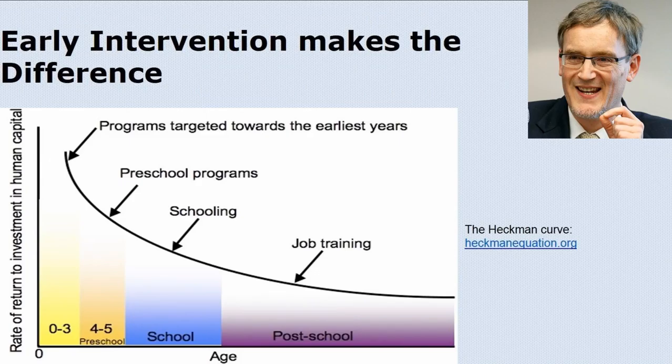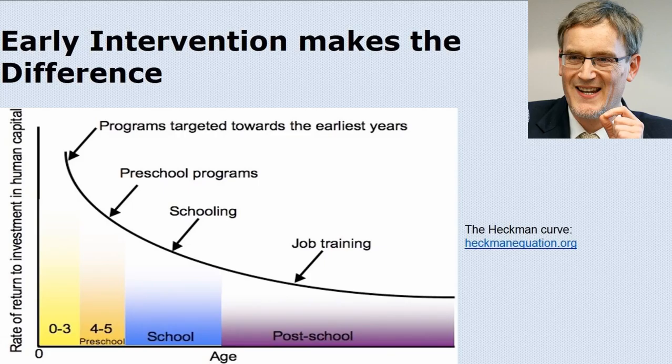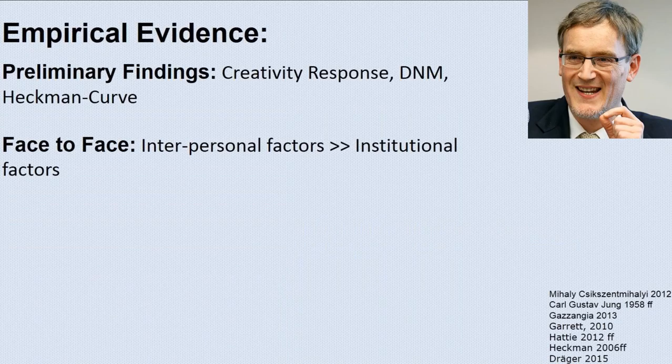The third preliminary finding is the Heckman curves. If we talk about learning curve, we've got to talk about Heckman — he got the Nobel Prize, so it's not just some marginal scholar thinking about learning. If we want to improve the learning curve, we've got to invest in the first three to five years. That's the highest return on investment. Invest in early intervention — that makes the difference. The first five years, this is where the music plays.